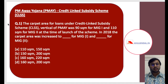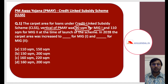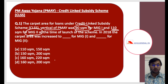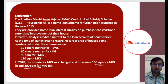The first question for today is from Pradhan Mantri Awas Yojana PMAY CLSS credit linked subsidy scheme. The question says the carpet area for loans under the credit linked subsidy scheme, which is a vertical of PMAY, was 90 square meters for MIG 1 and 110 square meters for MIG 2 at the time of launch. In 2018 the carpet area was increased for both MIG 1 and MIG 2. The answer is D — it has now been increased to 160 square meters for MIG 1 and 200 square meters for MIG 2.